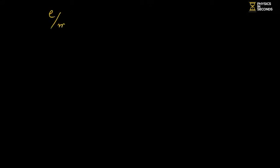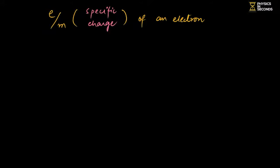Next topic: Charge to Mass Ratio of an Electron. Charge to Mass Ratio is also called Specific Charge — that is the other name we have for it. The Charge to Mass Ratio value for an electron is constant, and its value is 1.7 × 10¹¹ coulomb per kilogram.